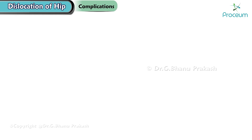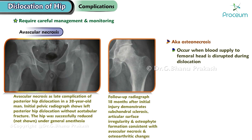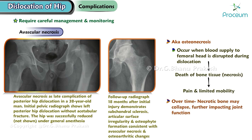Complications of hip dislocations. Hip dislocations can give rise to several serious complications that require careful management and monitoring. Avascular necrosis, also known as osteonecrosis, can occur when the blood supply to the femoral head is disrupted during the dislocation. This leads to the death of bone tissue, which can result in pain and limited mobility. Over time, the necrotic bone may collapse, further impacting joint function.